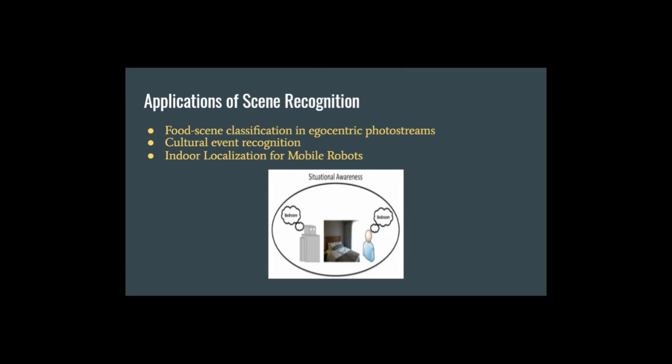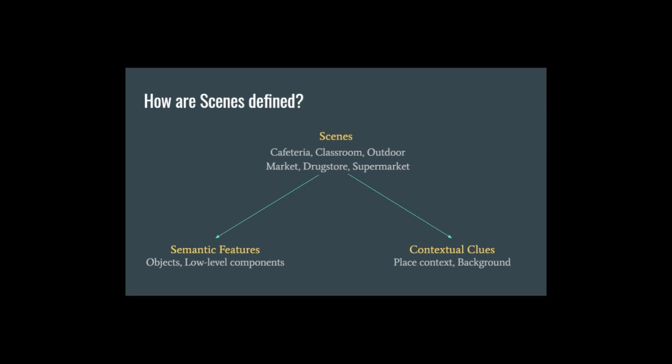In order to approach the task of scene recognition, we need to consider how scenes are defined. We can look at them using two complementary aspects. First, we have semantic features, meaning the objects, activities, and other high-level information of what is occurring in the scene. And then we have contextual clues, which include the background itself, textures, and related colors of the environment that are captured within the image.